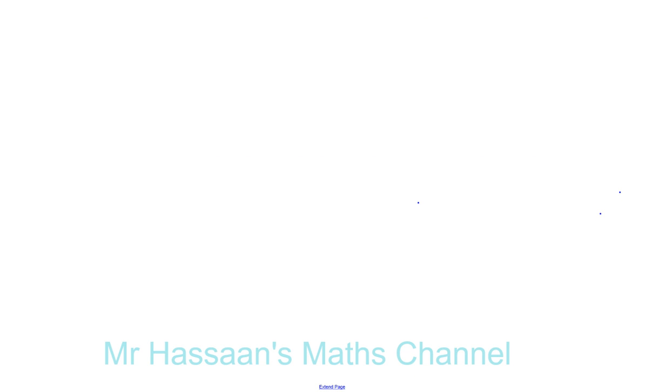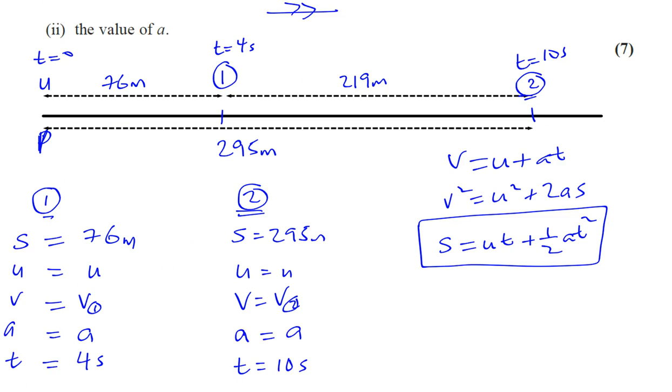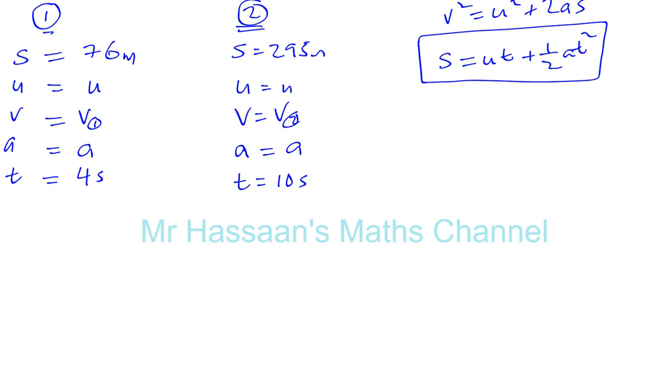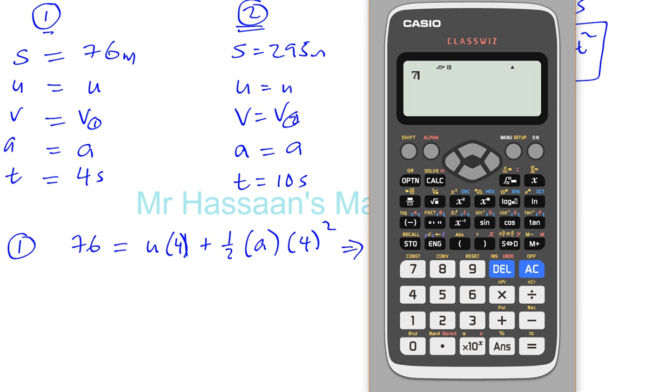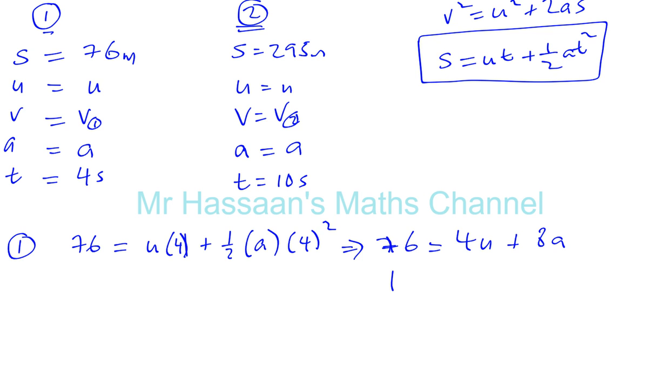So let's deal with that one. Let's now make an equation from situation one. We have S equals UT, so 76 equals U times T plus one half A times T squared. That will give me the equation 76 equals 4U plus 16 divided by 2, which is 8A. Let's simplify this. 76 divided by 4 gives us 19. So this is 19, and 4U divided by 4 is U, and 8A divided by 4 is 2A. So we can say that's equation one.